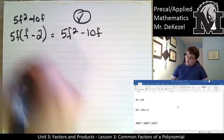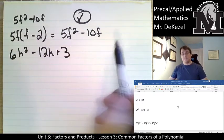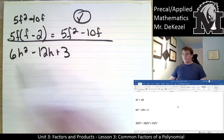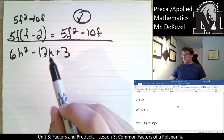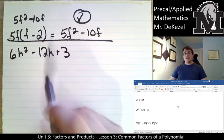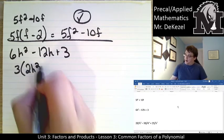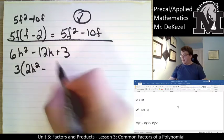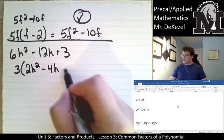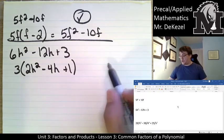Next: 6h squared minus 12h plus 3. There are no common variables across all three terms because this one has two h's, this one has one, and this one has none. But they do share 3 as a common factor, so I pull 3 out: 3 times (2h squared minus 4h plus 1). Because 3 times 2h squared is 6h squared, 3 times minus 4h is minus 12h, and 1 times 3 is 3.